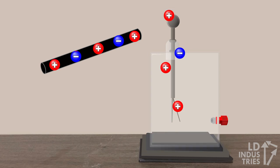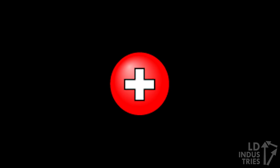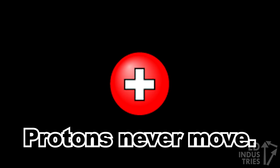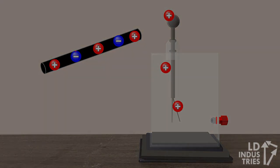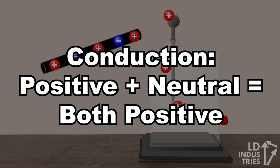The leaves deflect again due to the repulsion between the protons left in the leaves. Note through this process, protons never move, it's only the electrons which are the moving carriers of charge. And also note how in conduction, a positive rod caused a neutral electroscope to become positive.